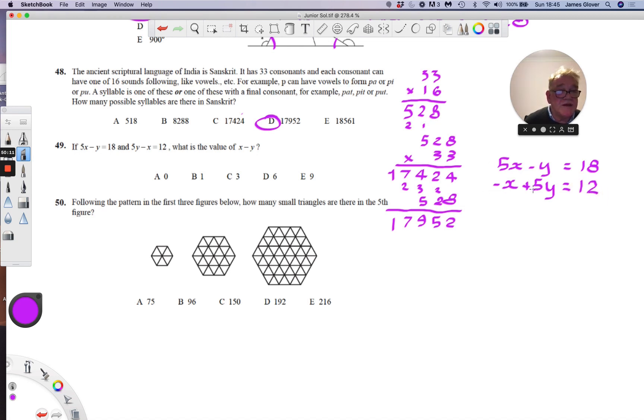We're looking for x minus y. So I'm going to take the second equation away from the first equation. I'm going to subtract. 5x take away negative x is 6x. So subtract here. Minus y take away 5y is minus 6y. And 18 take away 12 is 6. Divide everything by 6 and we get 1 as the answer.